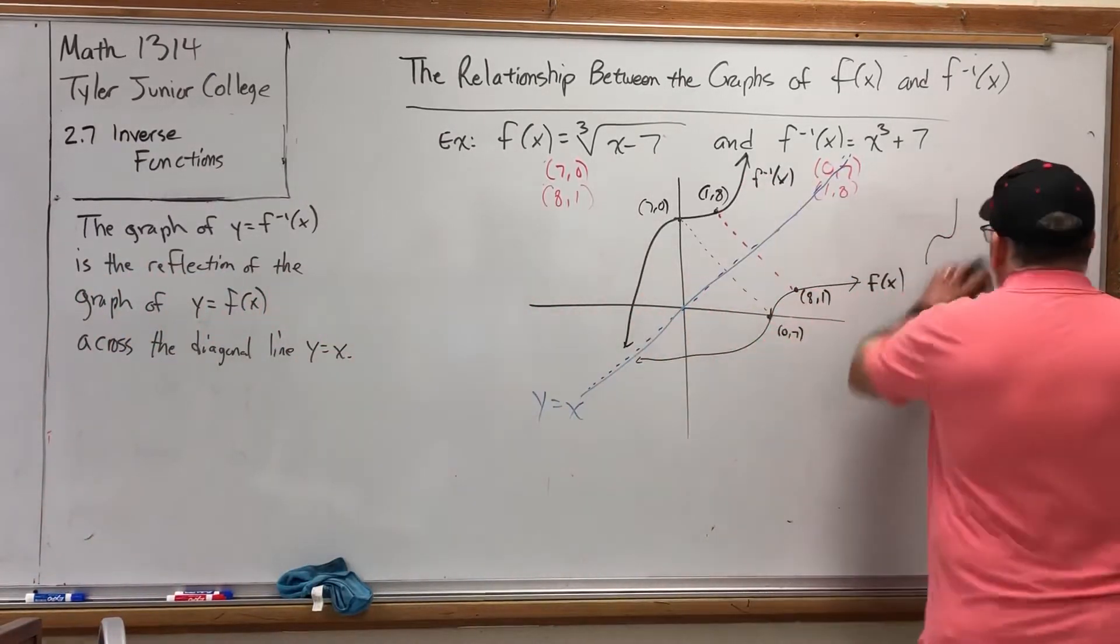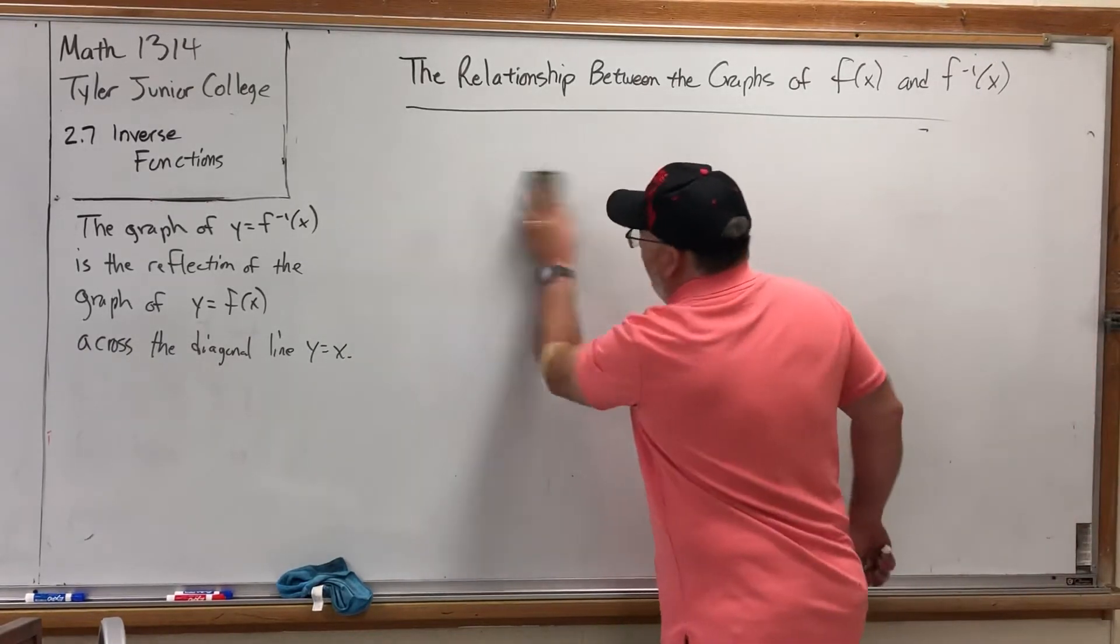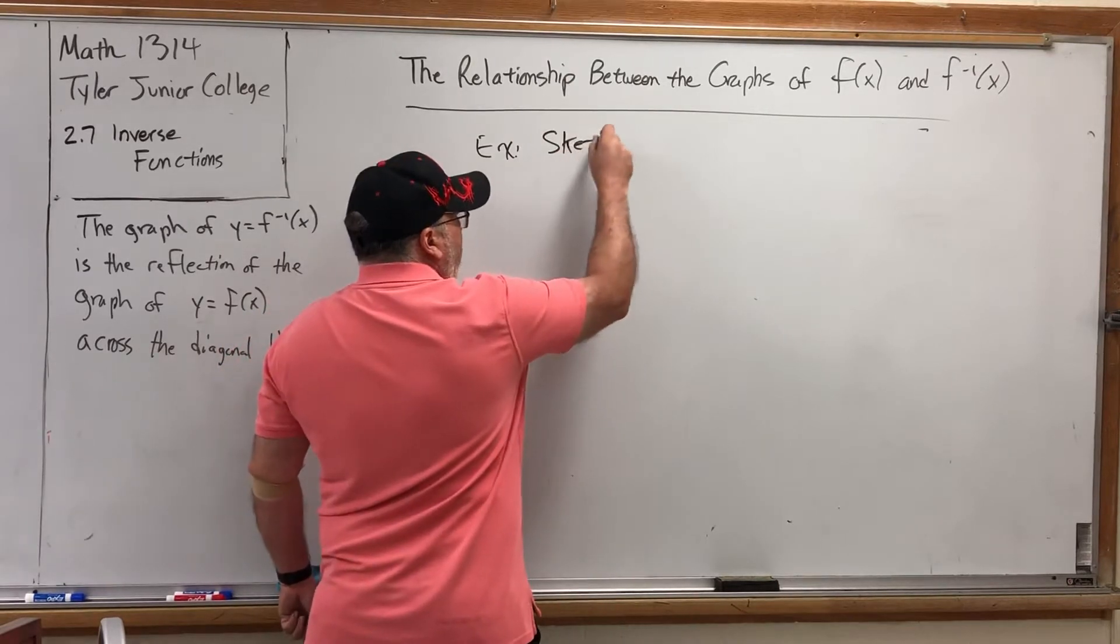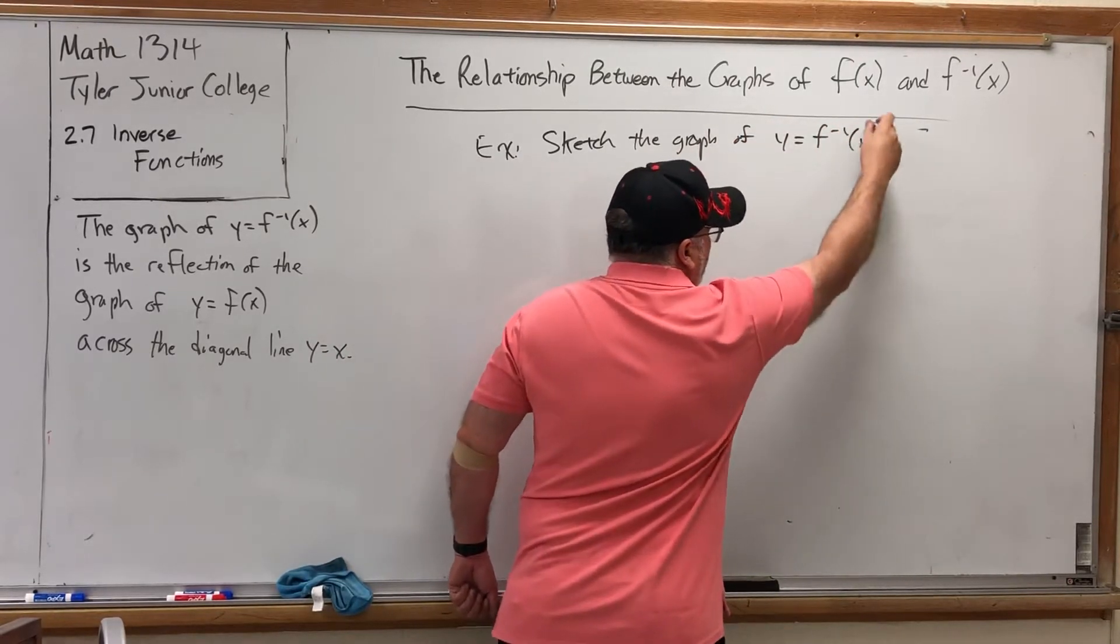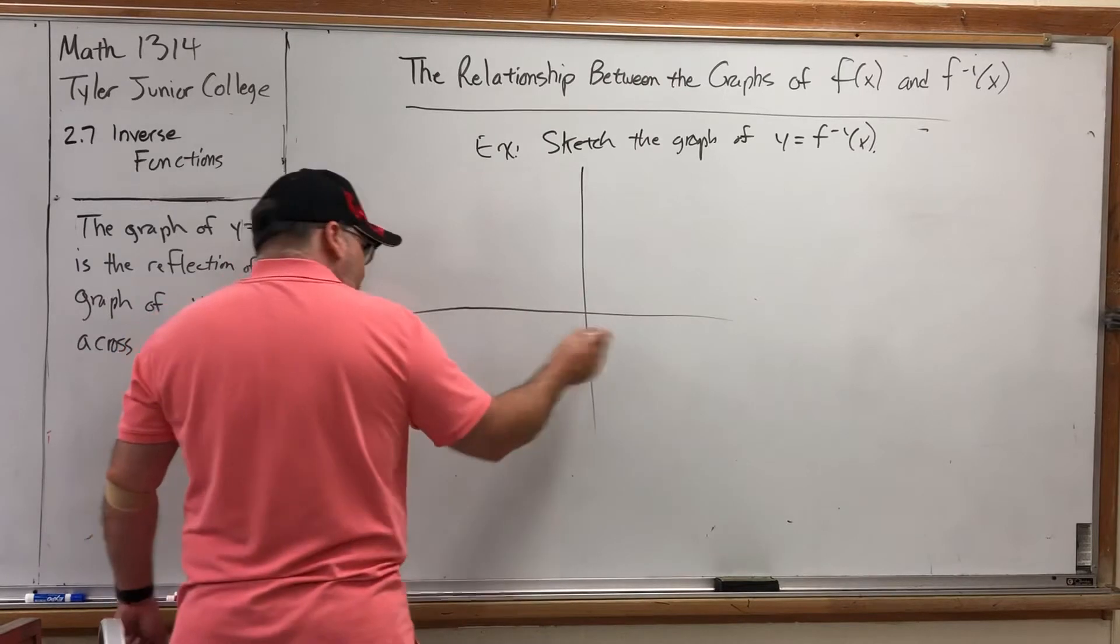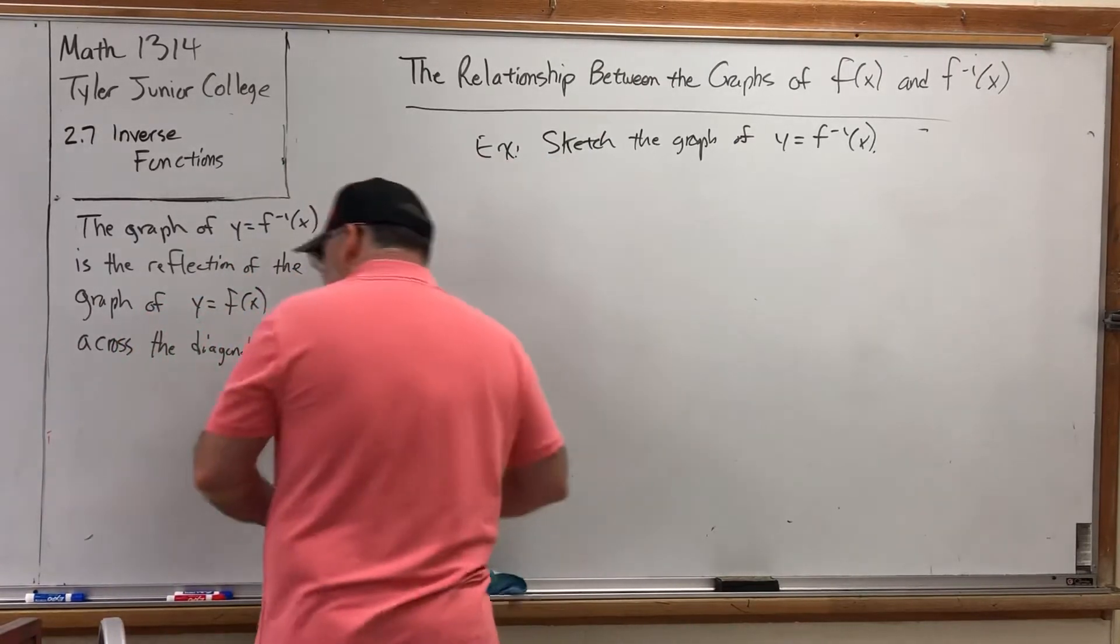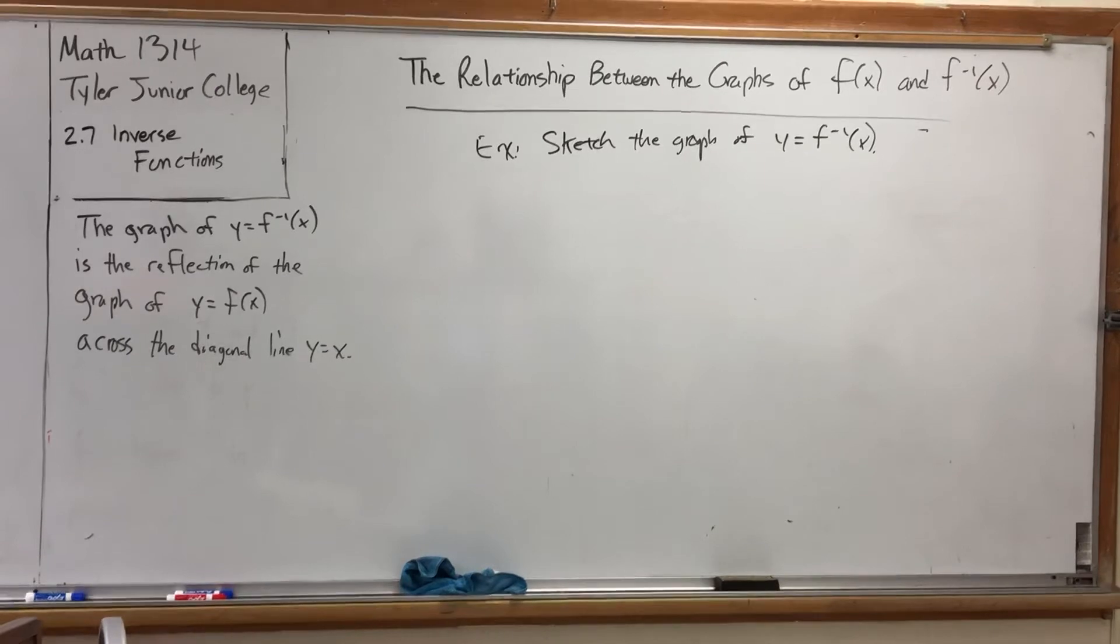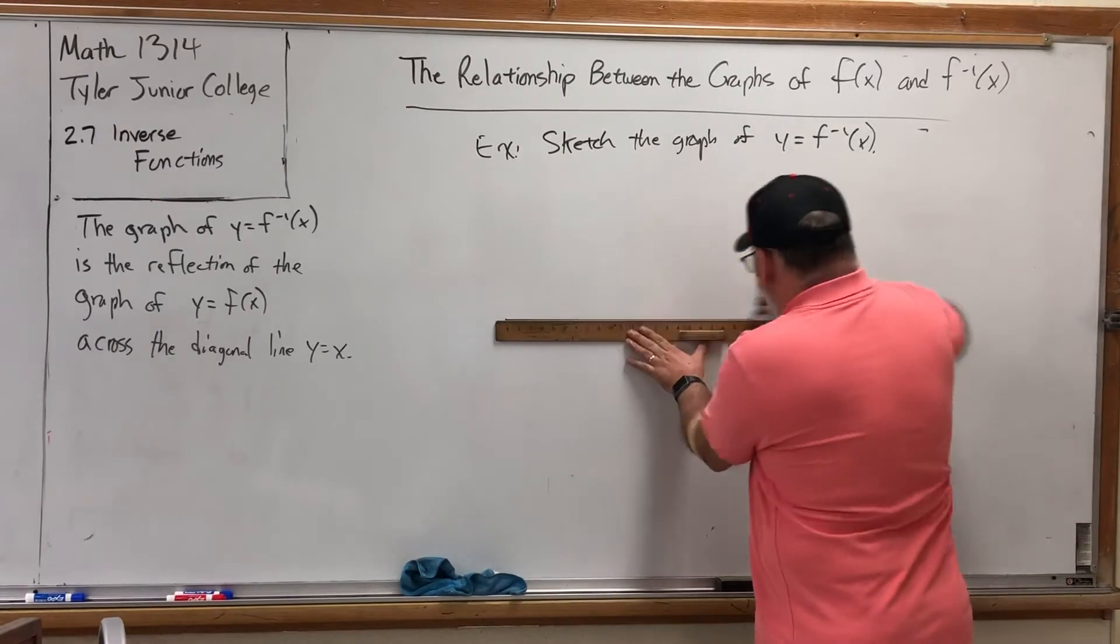Every point above has a mirror image below and vice versa. It's almost like this line is serving as a mirror. If you tilt your head, it's a little easier to see. So to summarize that, the graph of y equals f inverse of x is the reflection of the graph of y equals f(x) across the diagonal line y equals x. So how can we use this to answer a question besides discovering the relationship? Well, I can give you the graph of a function and ask you to draw the graph of its inverse.